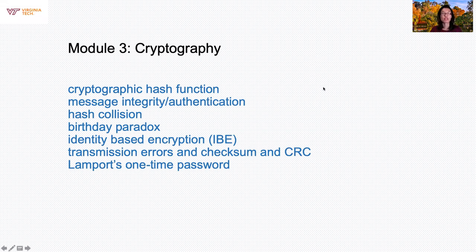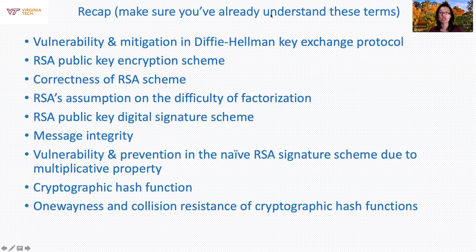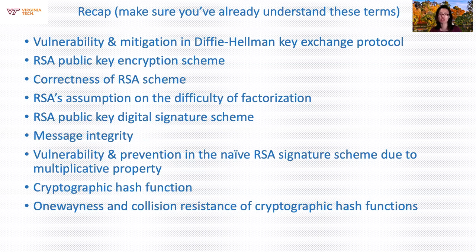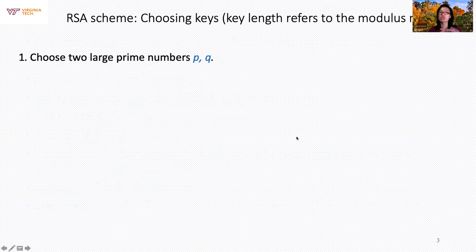Hi, welcome back. Today we want to finish our cryptography discussion and end module 3 so that we can begin our discussion on network security and web security. There are a lot of interesting topics we'll cover today. Just a little bit of recap: last time we talked about Diffie-Hellman key exchange, why it is broken, how to fix it, RSA public key cryptosystem which included the encryption scheme and also the digital signature scheme. We showed why it is correct and how you sign on the hash value of messages. We also began our discussion on the cryptographic hash function. Today we want to do a little recap on RSA, which will also help you with your written homework assignment.